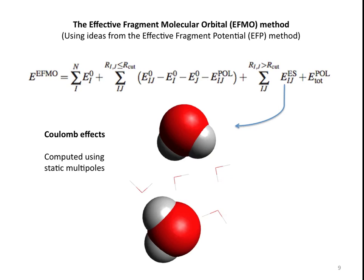If the fragments are far apart, then we calculate the interaction, the Coulomb interaction using multipoles—static multipoles that we calculate from the ab initio wave function of the gas phase molecules. We usually go up to quadrupoles or octupoles at all the atomic centers. And of course, the polarization interaction of these molecules is already taken into account here.